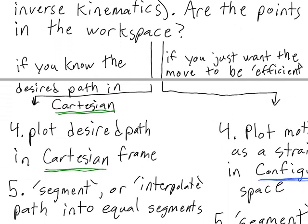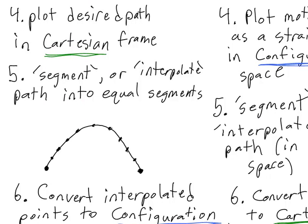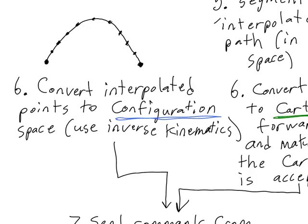Now we get to the part of the process where we have to decide whether we just want the move to be efficient, or if we want the move to be along a desired path in the Cartesian coordinate frame. In this example, I know the desired path — it's the half circle between the start and end point. So our next step is to plot the desired path in the Cartesian frame. I'm going to move on to step 5, which is to segment or interpolate the path into equal segments, getting the XYZ points of each equal segment so that I can convert them into configuration space using inverse kinematics. I'll use MATLAB to help me with that.